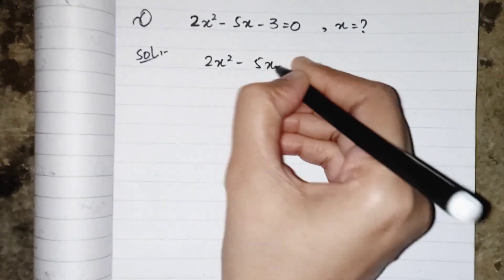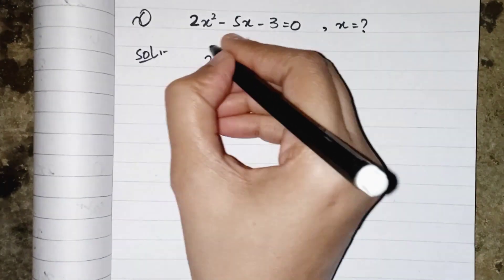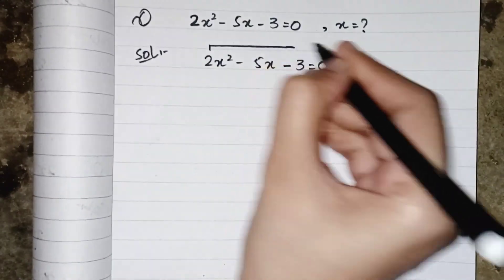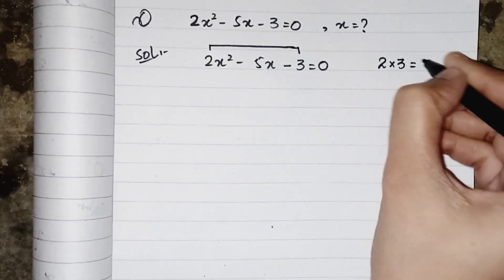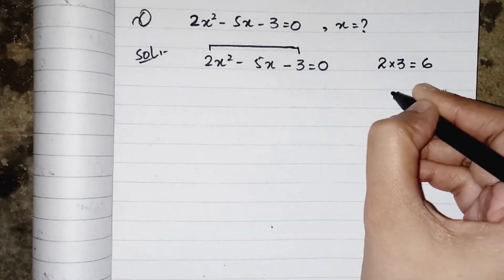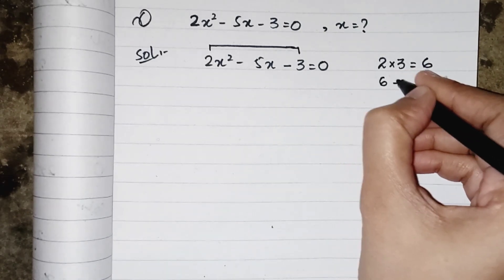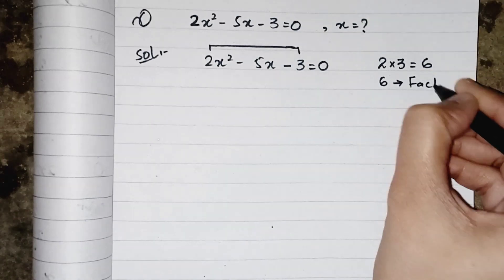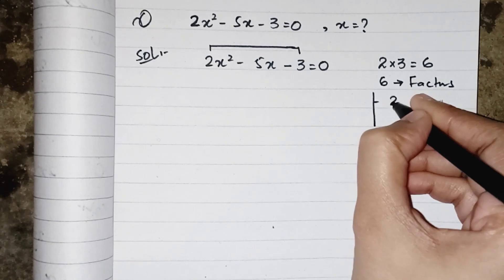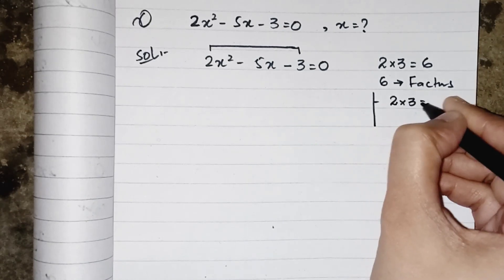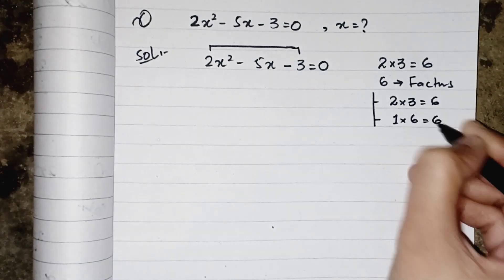So I have the coefficient 2 and 3 over here, so I have to multiply this 2 and 3 which result as 6. Now what we have to do with this 6? We have to find the factors of this 6. So the factors are 2 into 3 times result as 6, similarly 1 into 6 times result as 6.